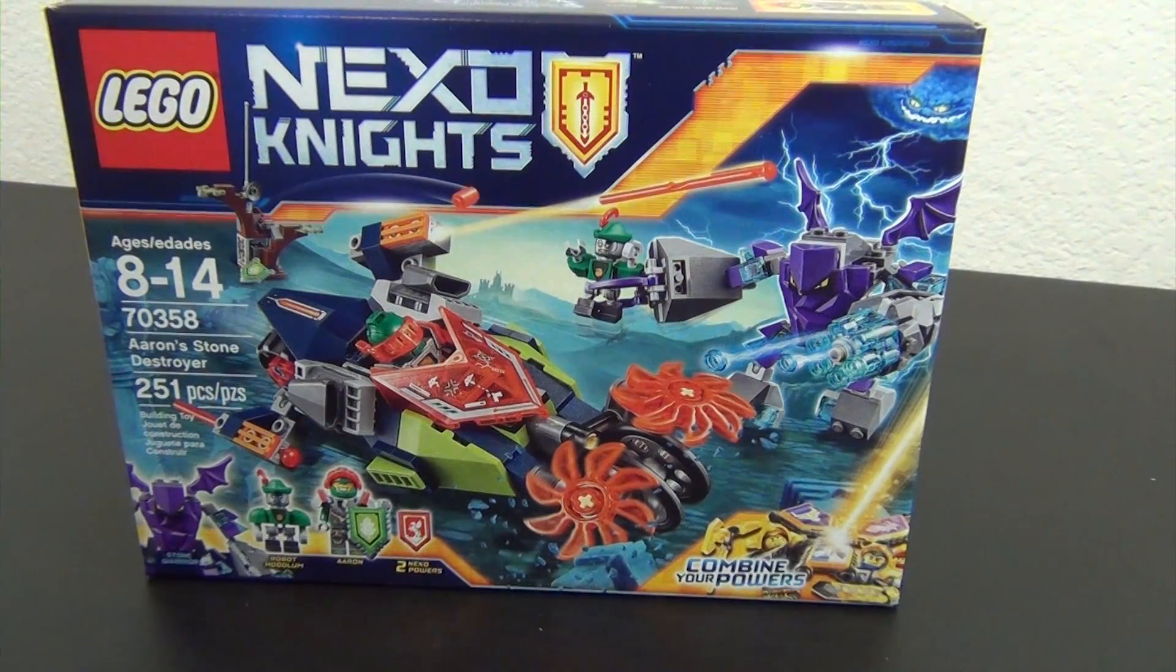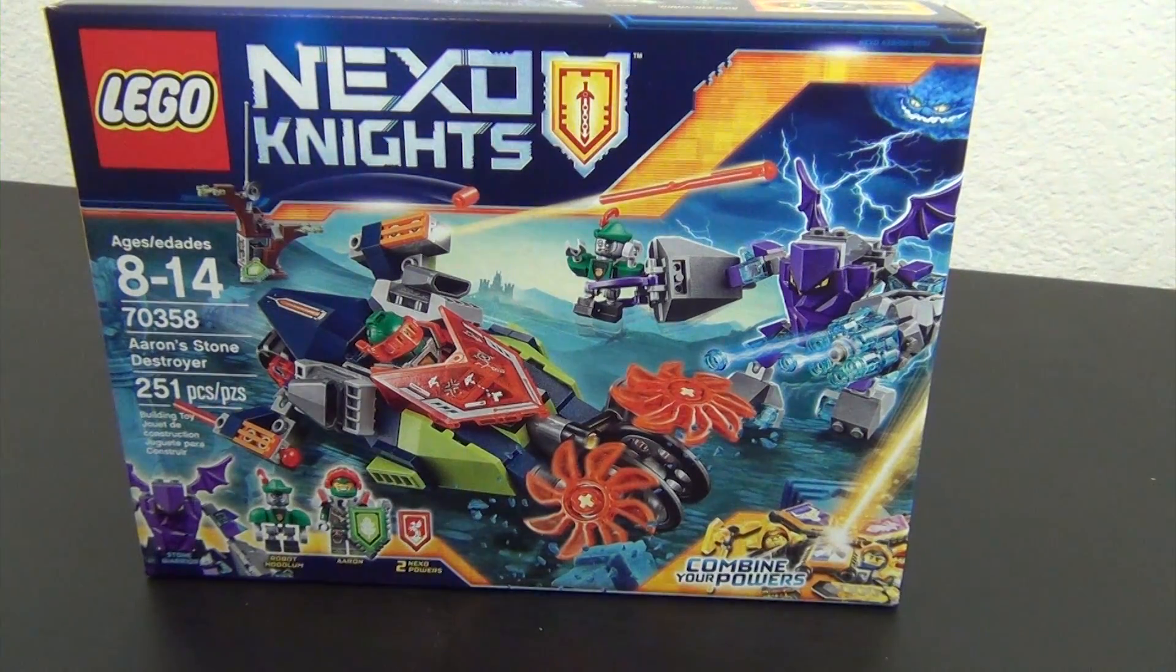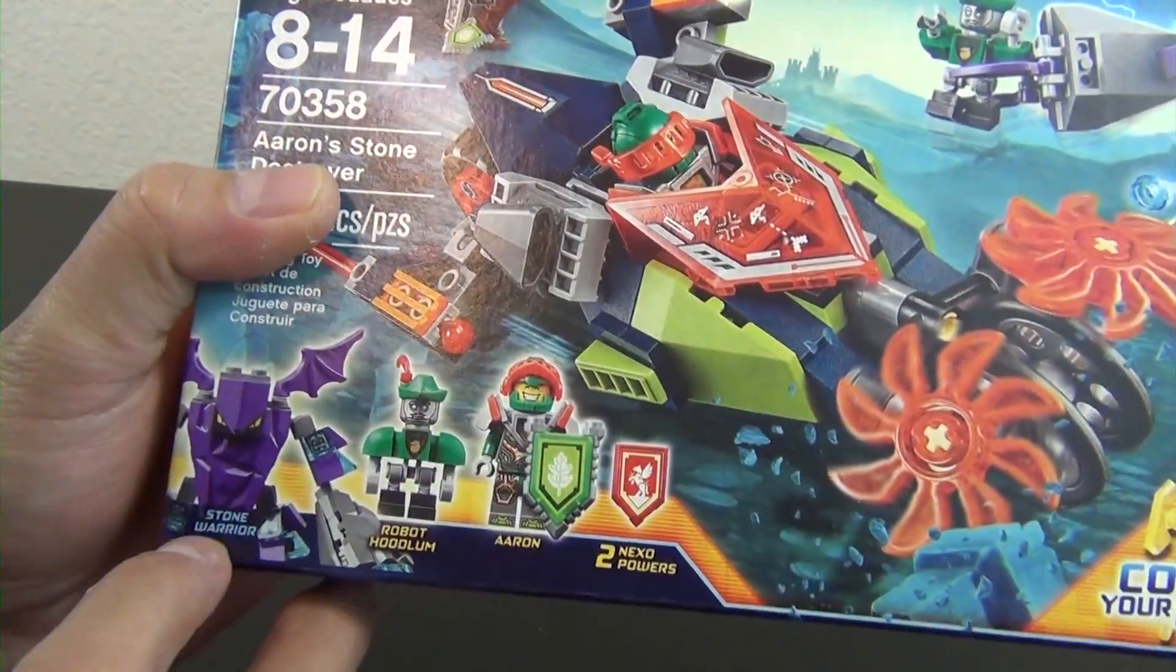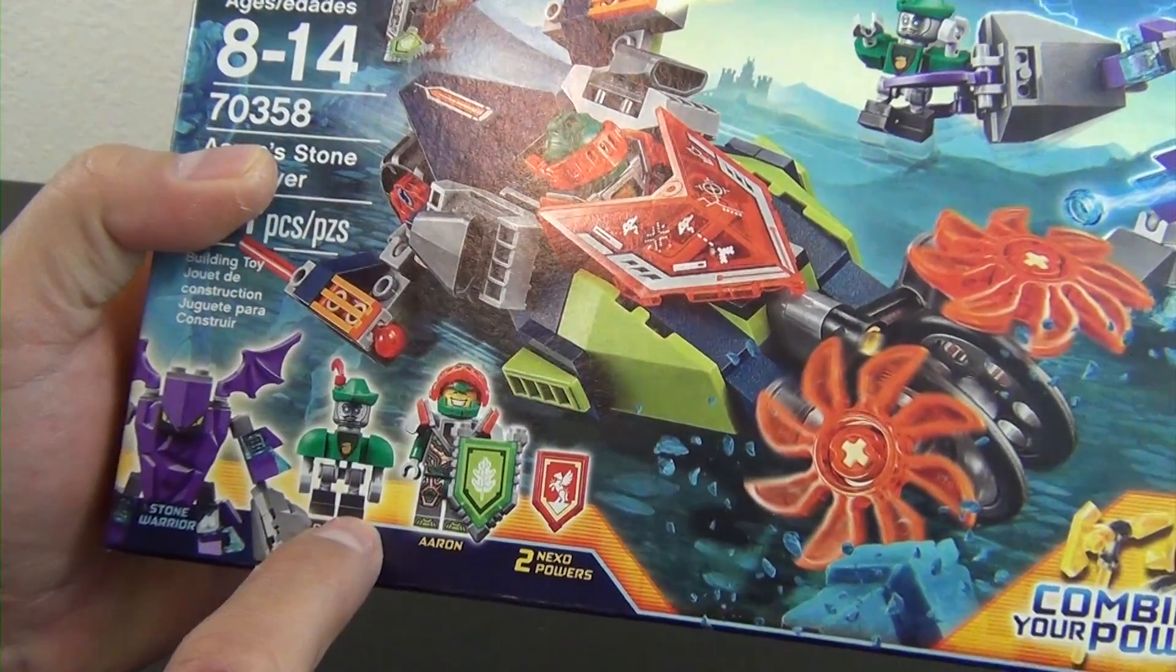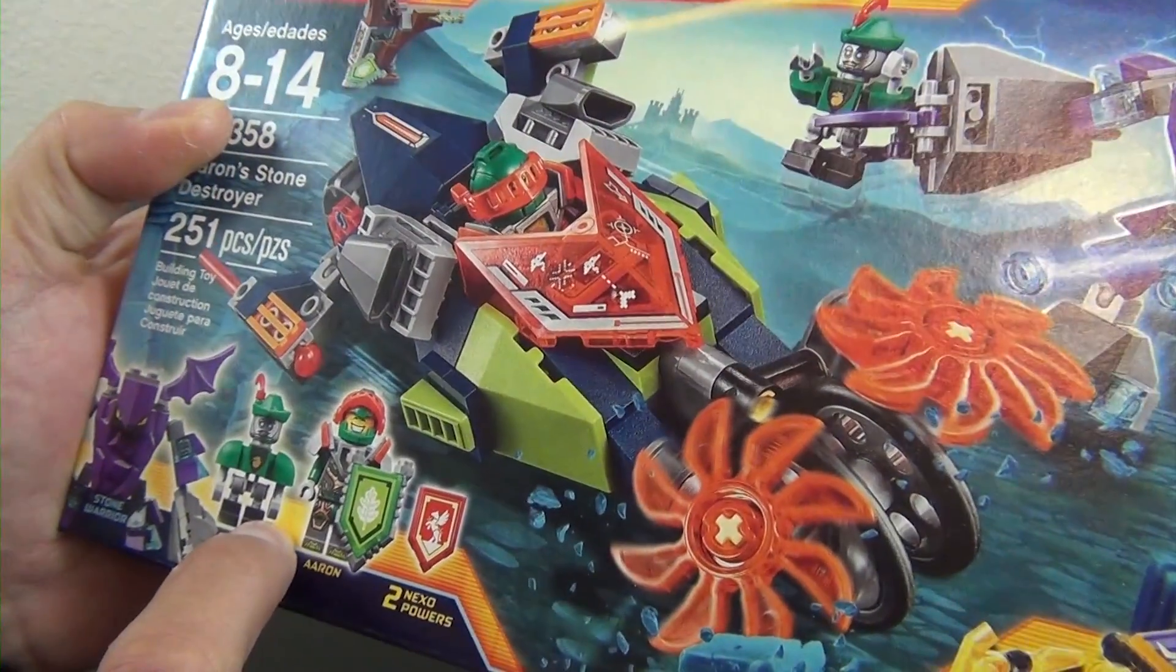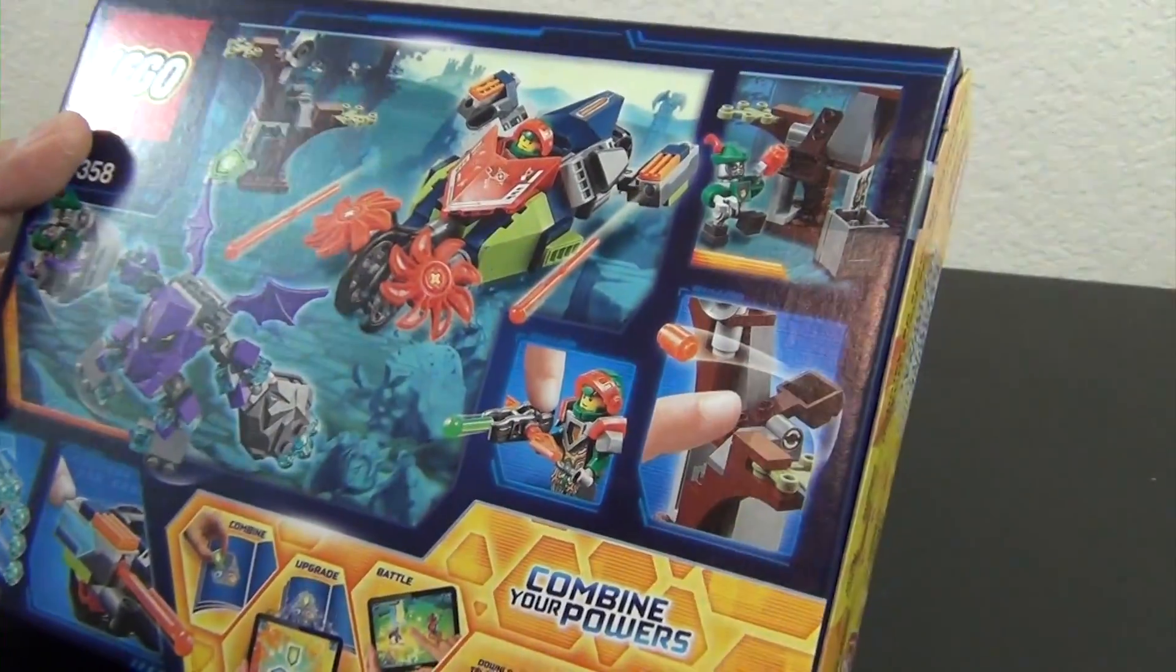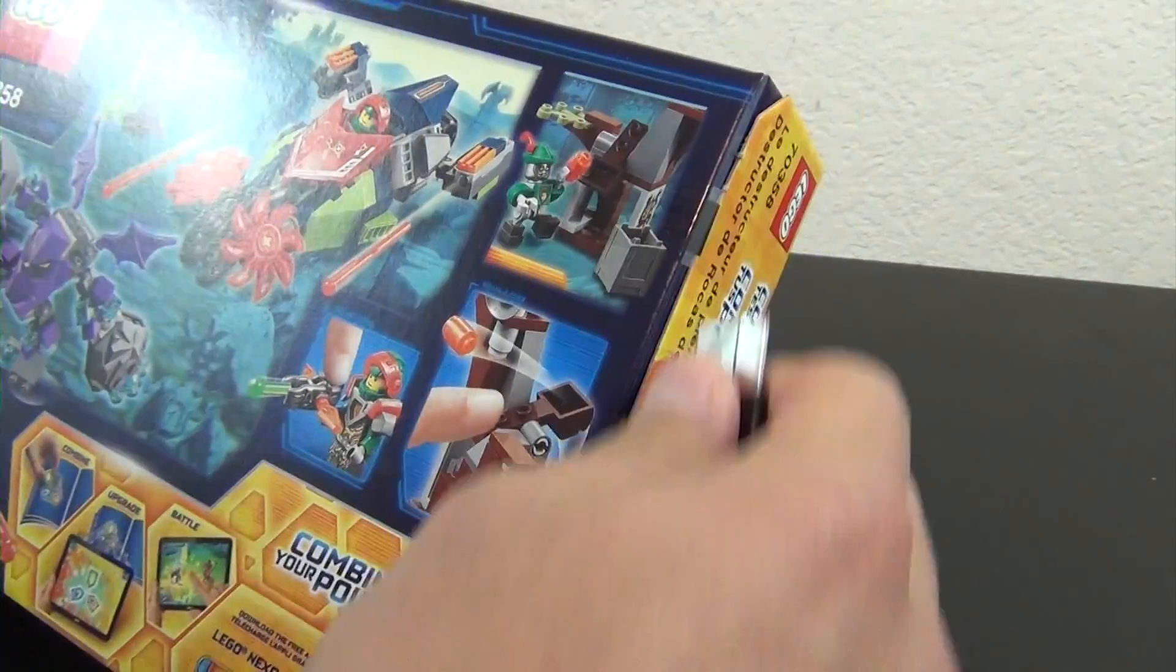Hey everyone, welcome back to the hidden break. Which everybody? Lego Nexo Knights Aaron Stone Destroyer. This is set number 70358, 251 pieces. We have a stone warrior, robot hoodlum, and then Aaron. It's usually like an Aaron bot or Clay bot. They call this a robot hoodlum for some reason. I mean, it is a bot.